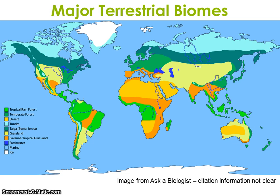Developed by Clements and Shelford, biomes are biotic units that are classified by predominant plant types. The eight major terrestrial biomes include tropical forests, temperate forests, boreal forests, temperate grasslands, tropical savanna, chaparral or shrublands, tundra, and desert. Also shown here are freshwater, marine, and ice cover.